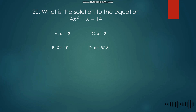In given number 20, we are asked to find the solution to the equation 4x² − x = 14. To determine the solution, we can simply check each of the choices by substituting them into the equation.